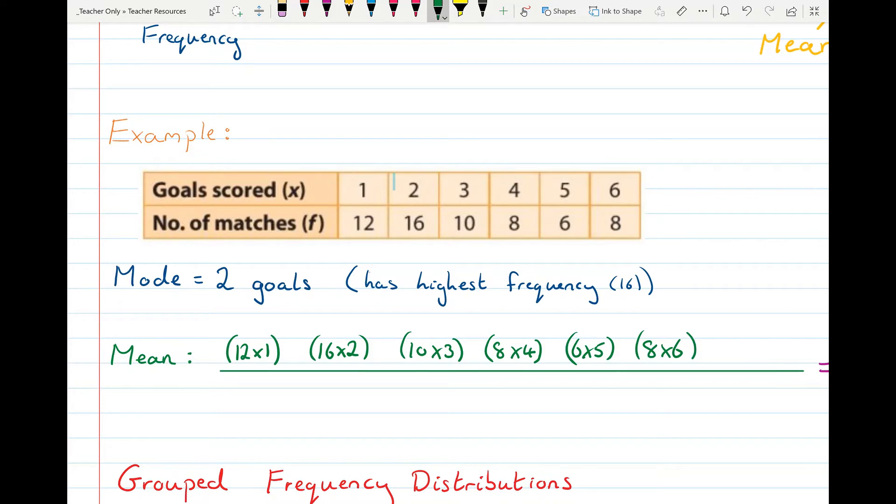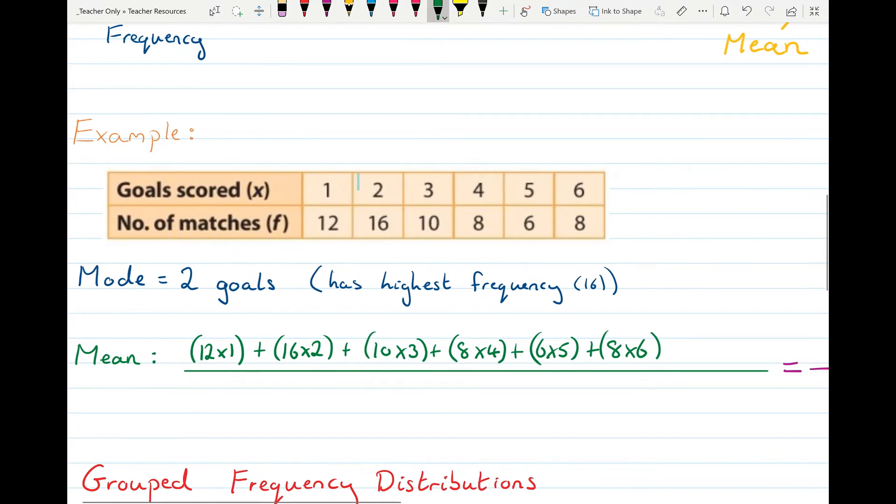So to find the total number of goals scored we add all of those up together. That gives us the total number of goals. That gives us 184 goals.